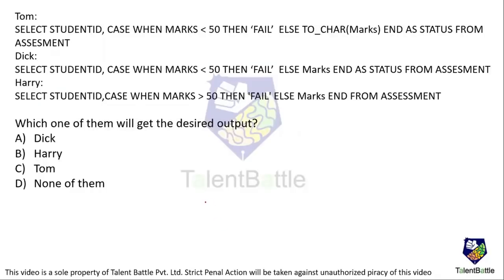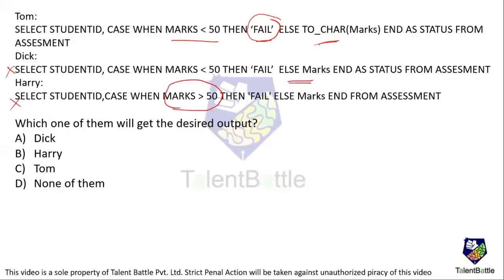Tom's query uses SELECT student_ID, CASE WHEN marks < 50 THEN 'fell' — focusing on the character data type — AS status FROM assessment. Dick's query doesn't mention the data type, so it will not work properly. Harry's query uses marks greater than 50, which is the wrong condition. So Tom's query is correct and gives the desired output. The answer for this question is C — you must focus on the data types in each query.